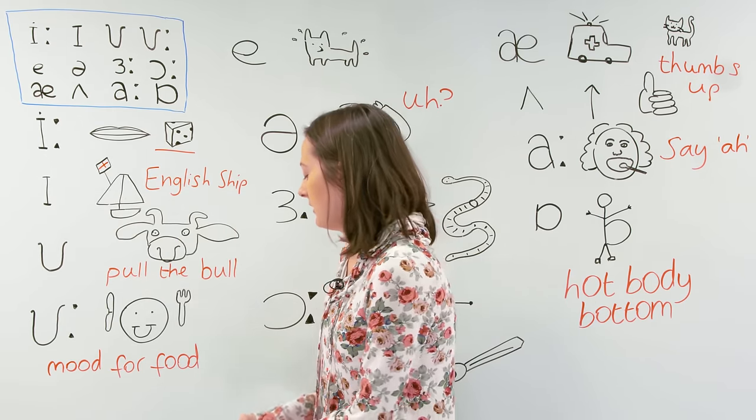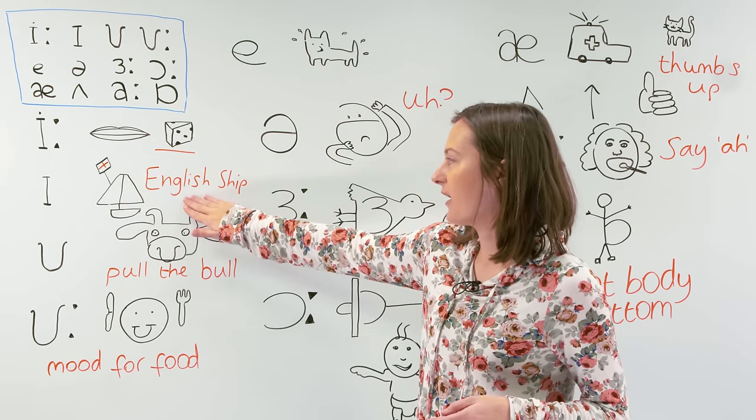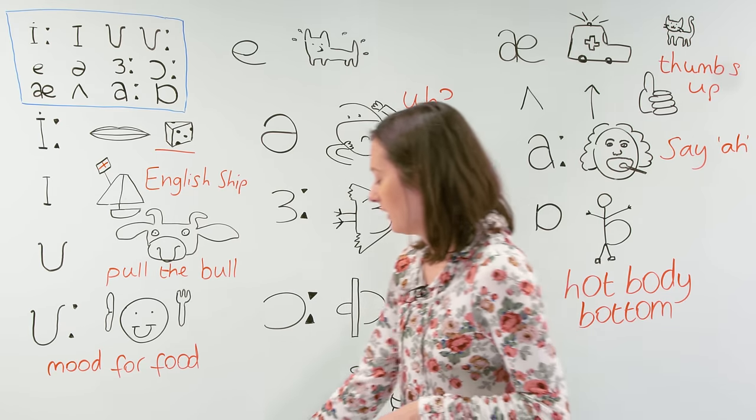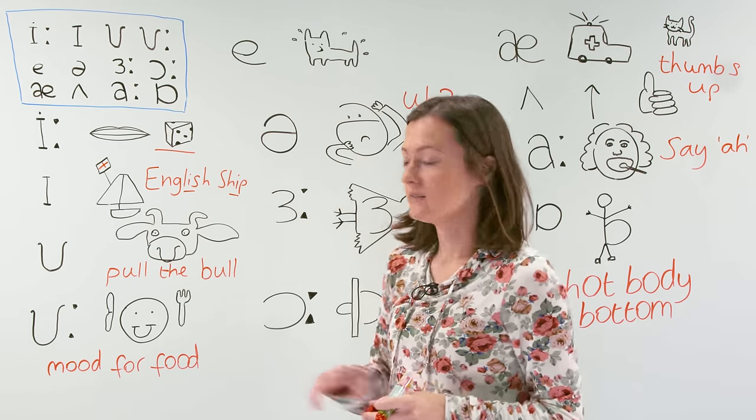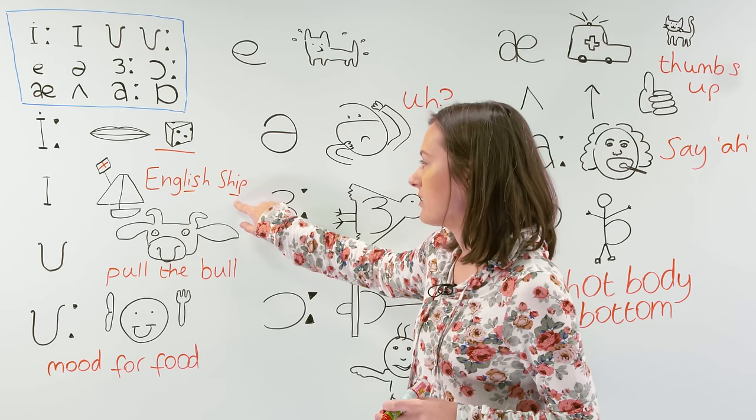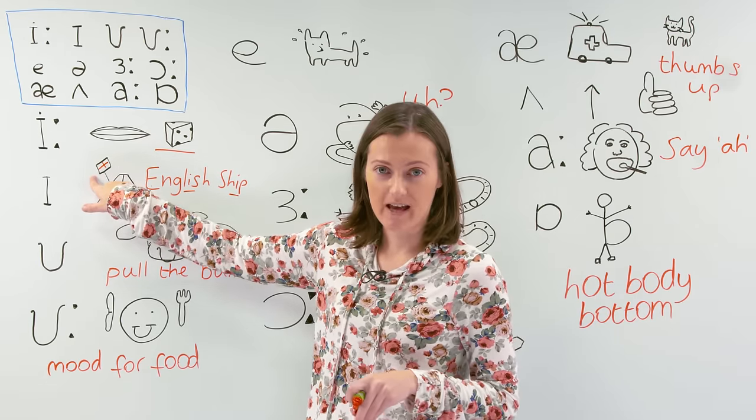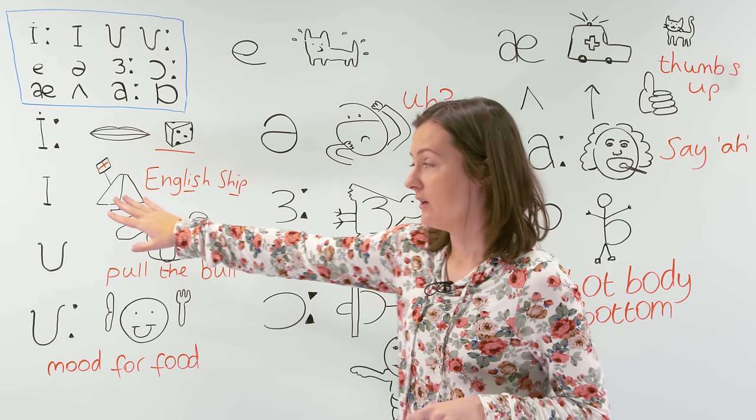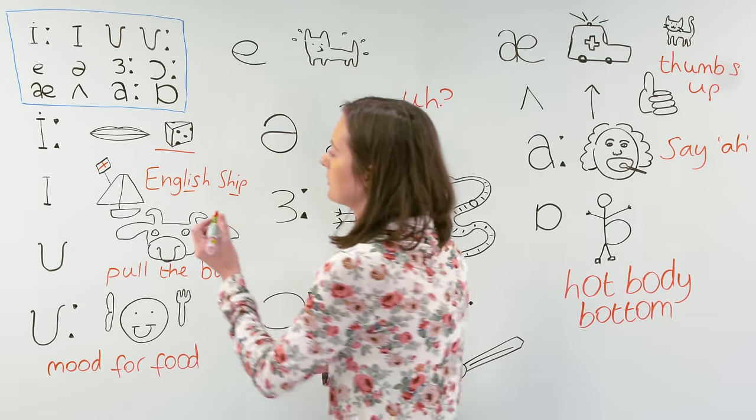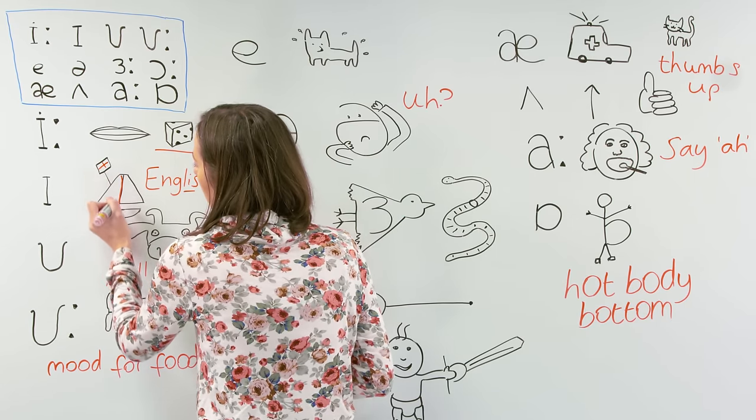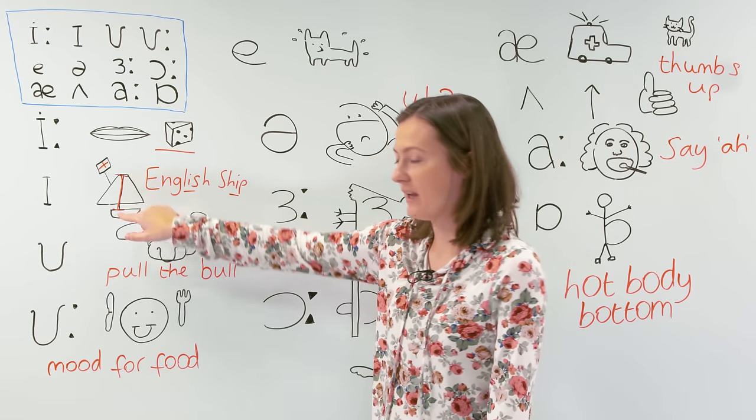Next we have I. To remember I, we can remember the phrase English ship. The phrase English ship has the I twice in it, once in English and once in ship. And I drew a picture of a ship here. Here we have the English flag, the St. George's flag which represents only England. And if you look inside the boat, we can also see the shape of the I.